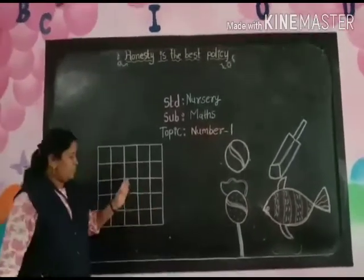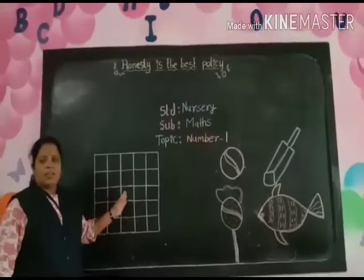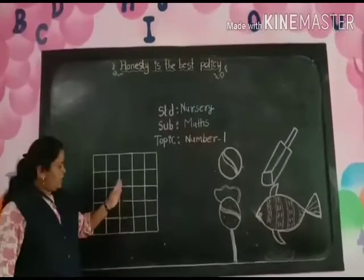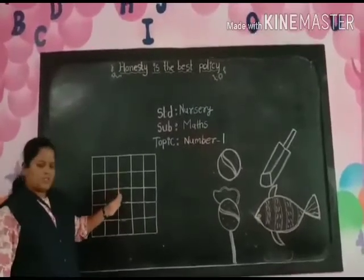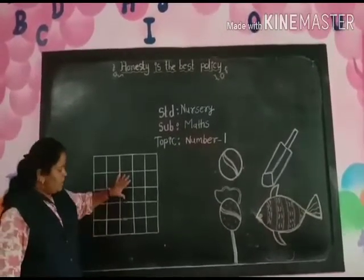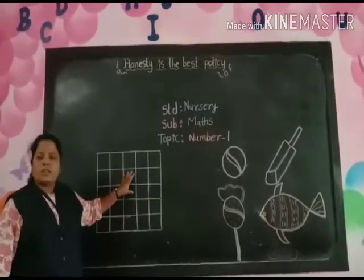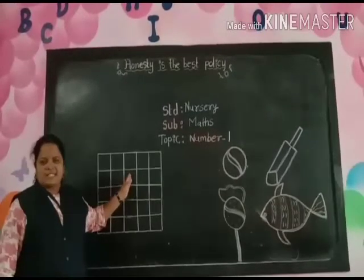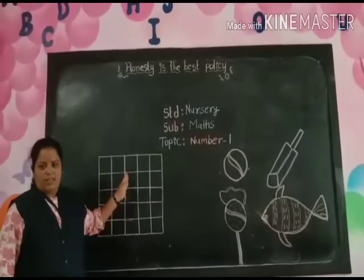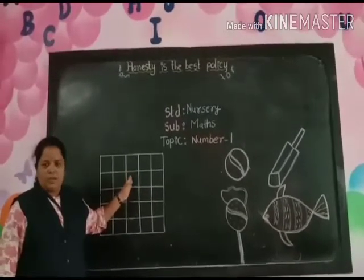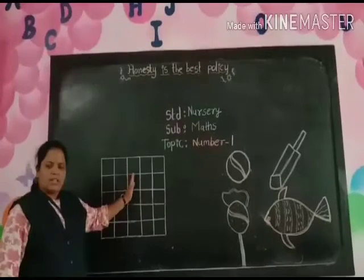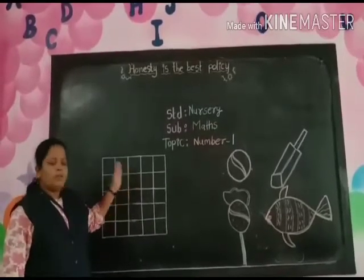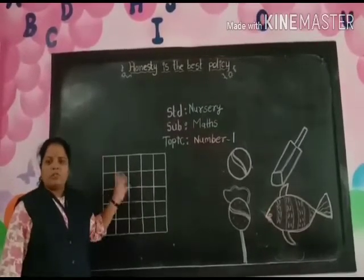Children, take your square line book like this. Look here, this is our square line book. This is math. Do you know how to count? This is our book, this is our number 1.